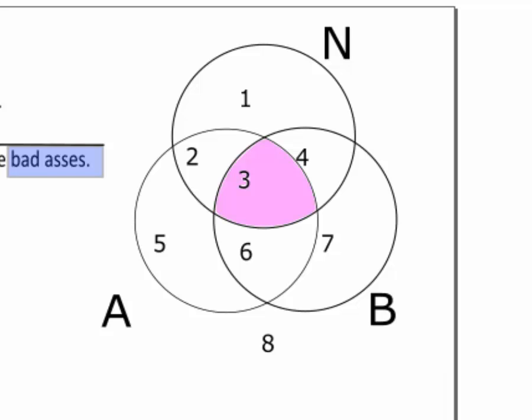Region 3 might be the easiest. Remember, there's no information on the diagram at this point. It just divides up the universe.